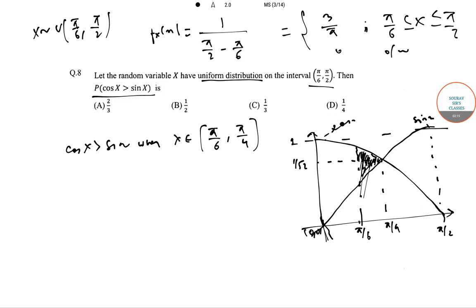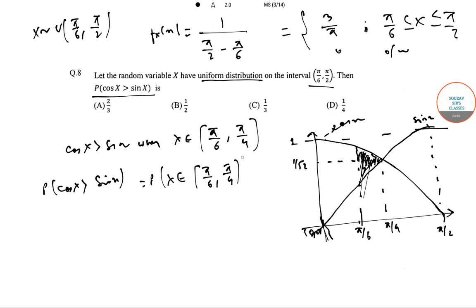In this region, cos x is above sin x. So the probability that cos x is greater than sin x equals the probability that x belongs to [π/6, π/4], which equals the integral from π/6 to π/4 of (3/π) dx.